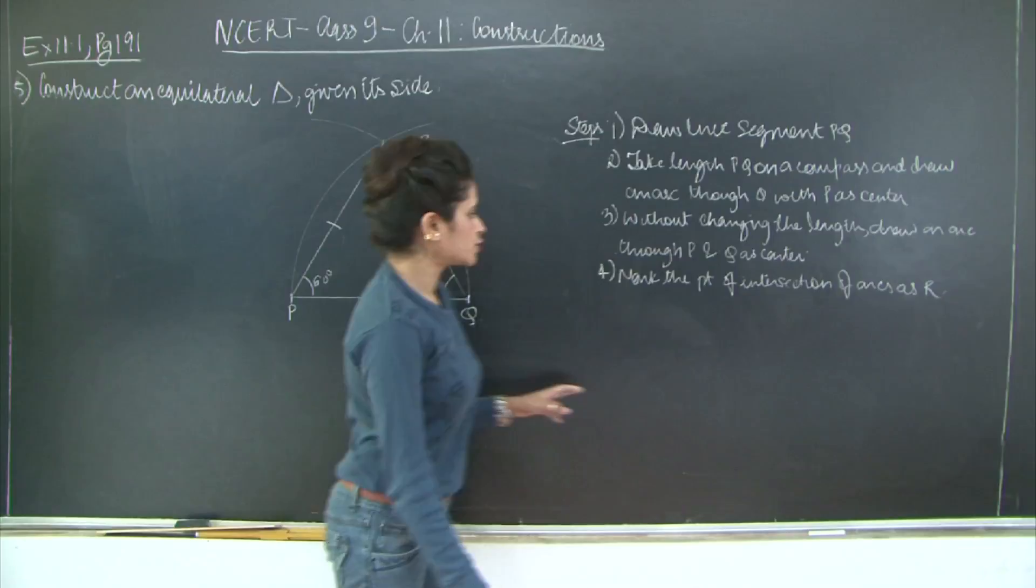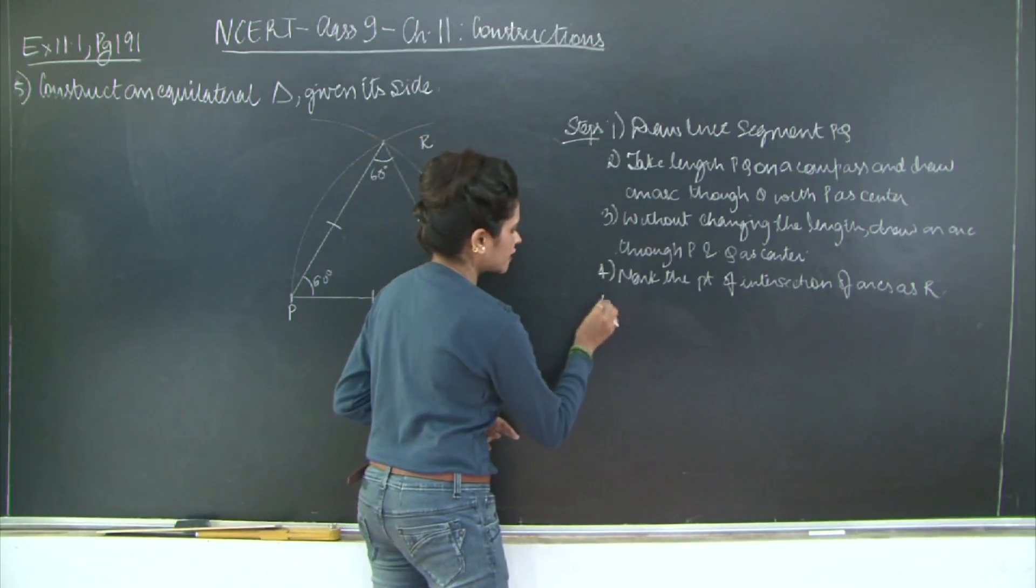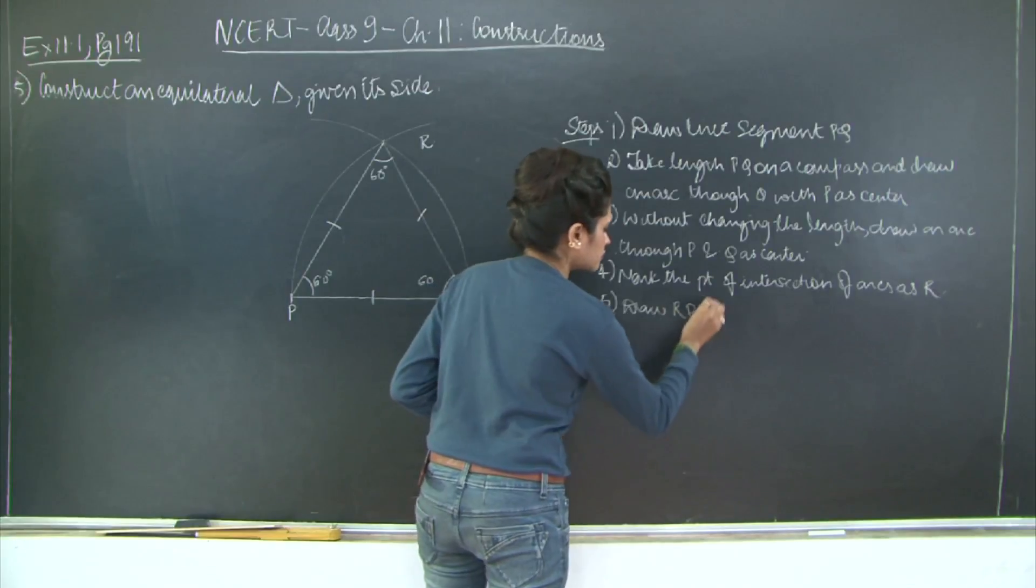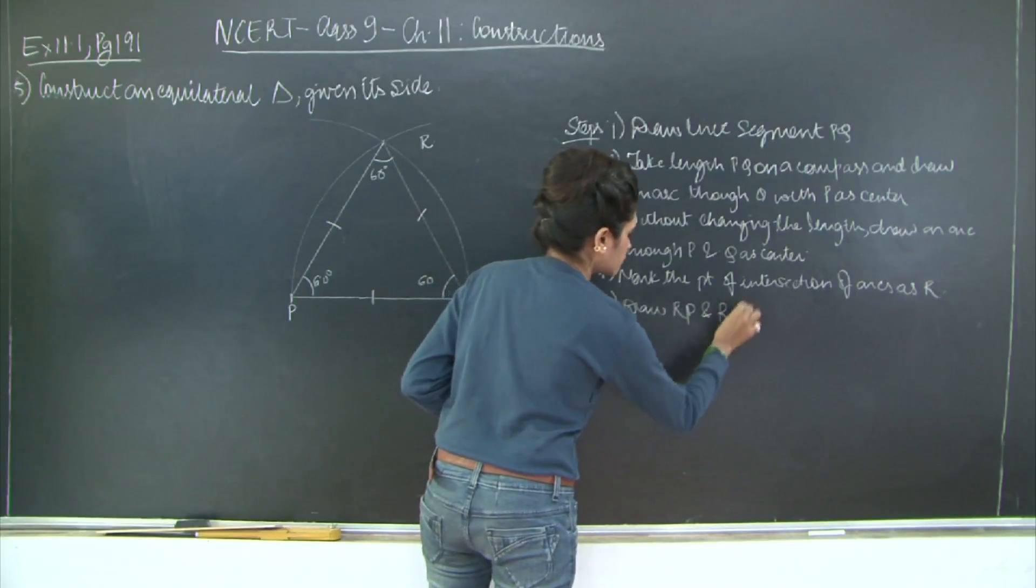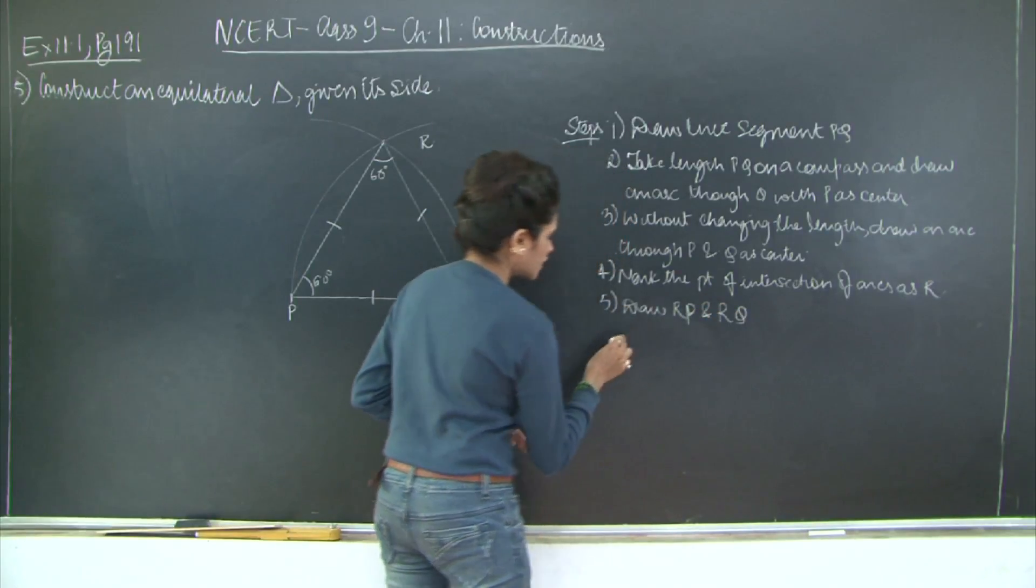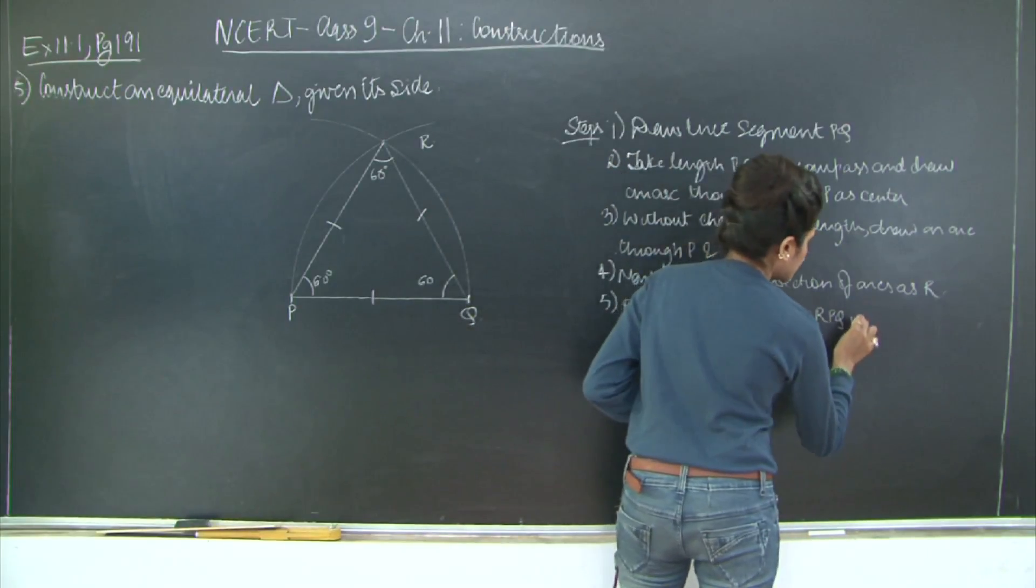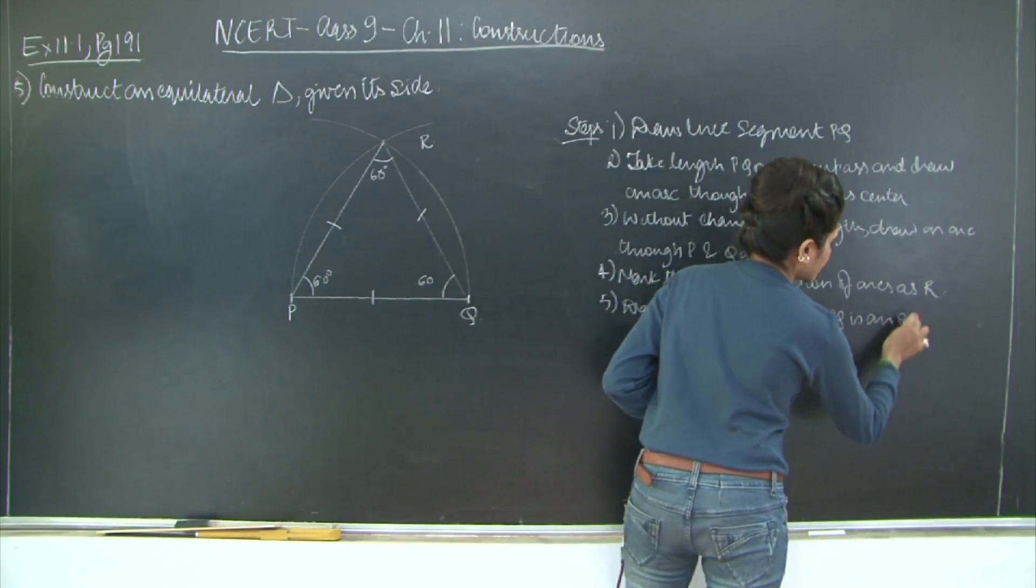Then draw RP and RQ. Triangle RPQ is an equilateral triangle.